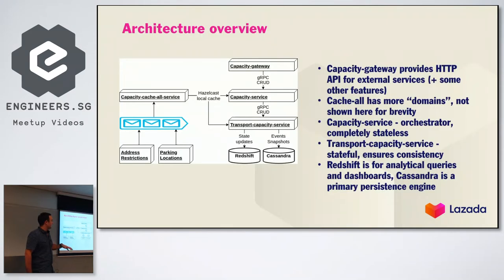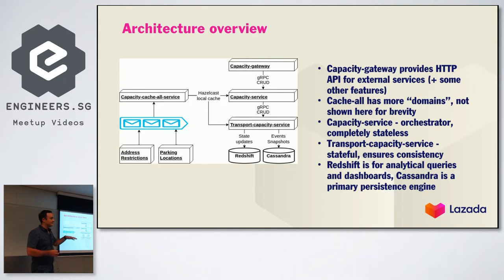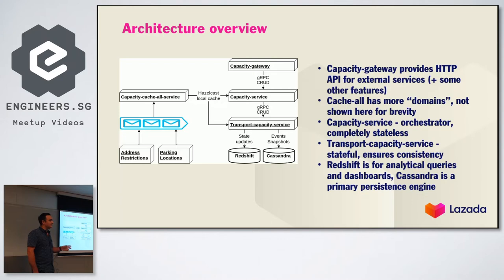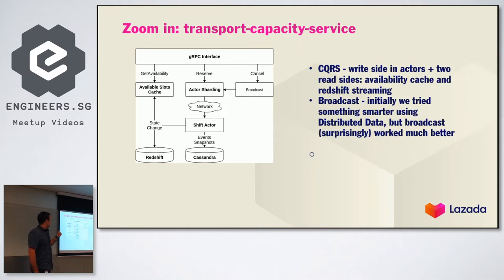Here's a high-level overview of our solution. We have a gateway service as the entry point, with a capacity service acting as orchestrator. There's also a capacity cache-all service — also known as 'god of cache' — which caches infrequently changed data from other services such as restrictions and parking locations. The transport capacity service is the stateful service that gives us all consistency guarantees. Cassandra is our main data store and Redshift handles analytical queries.